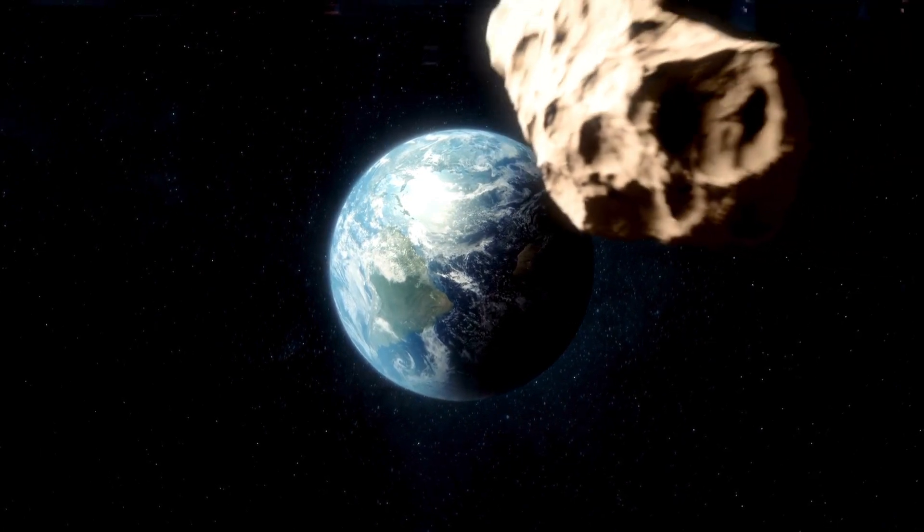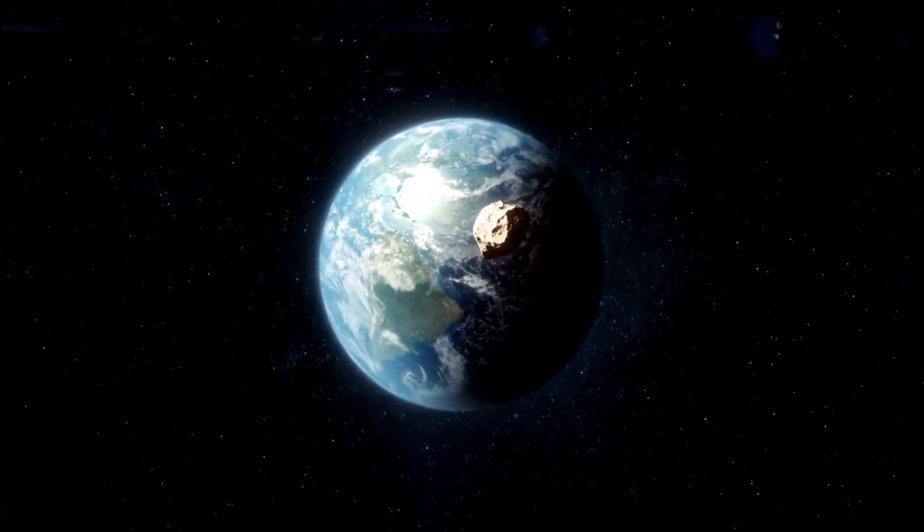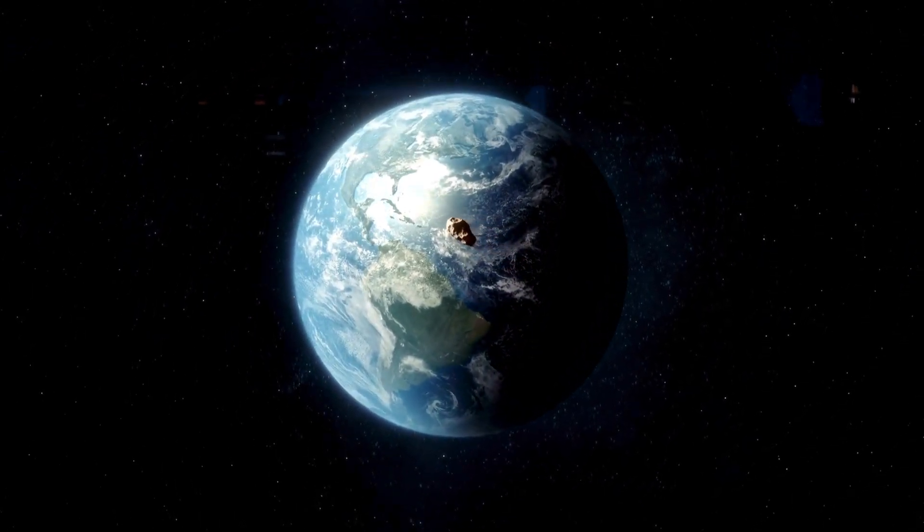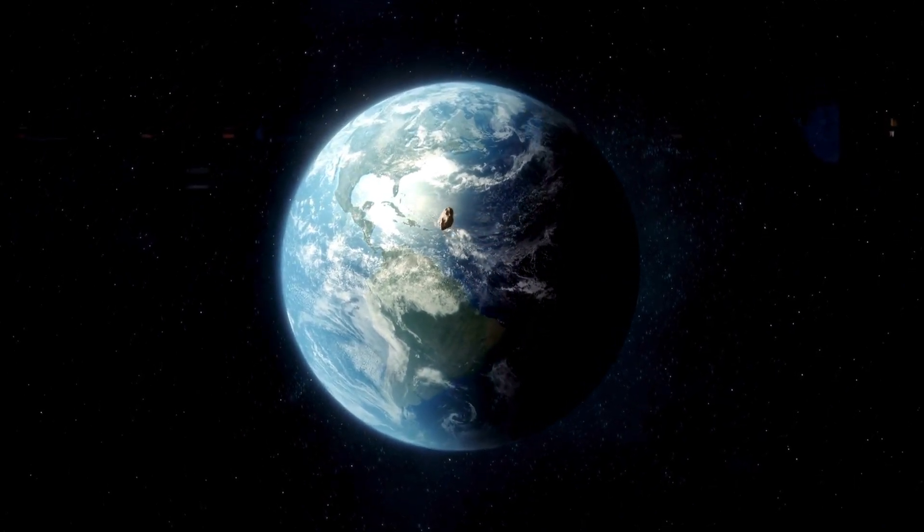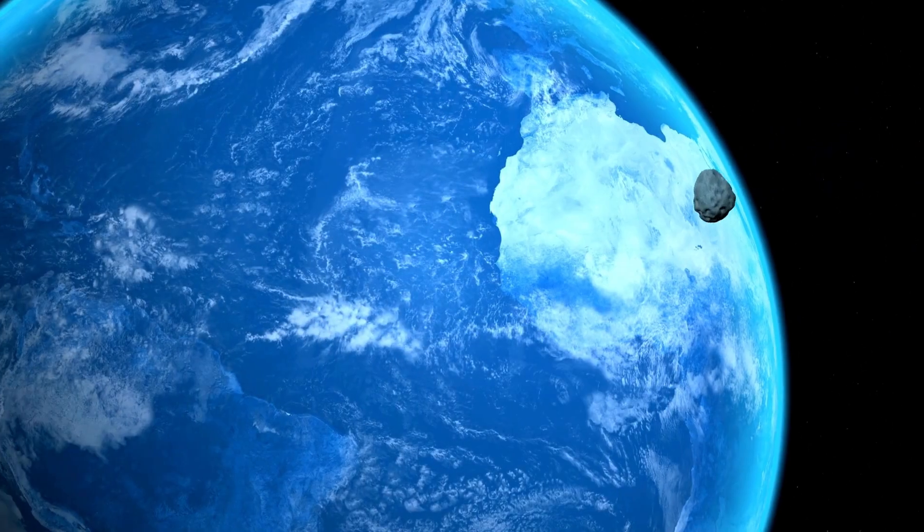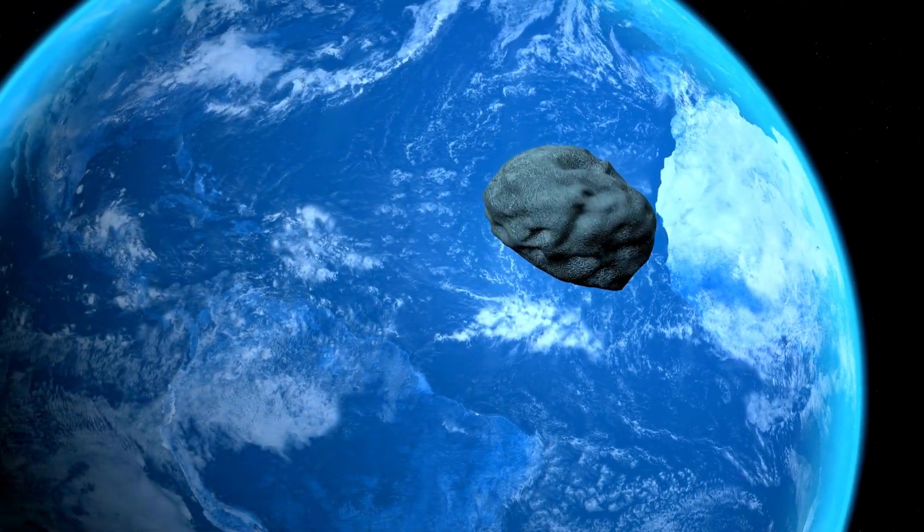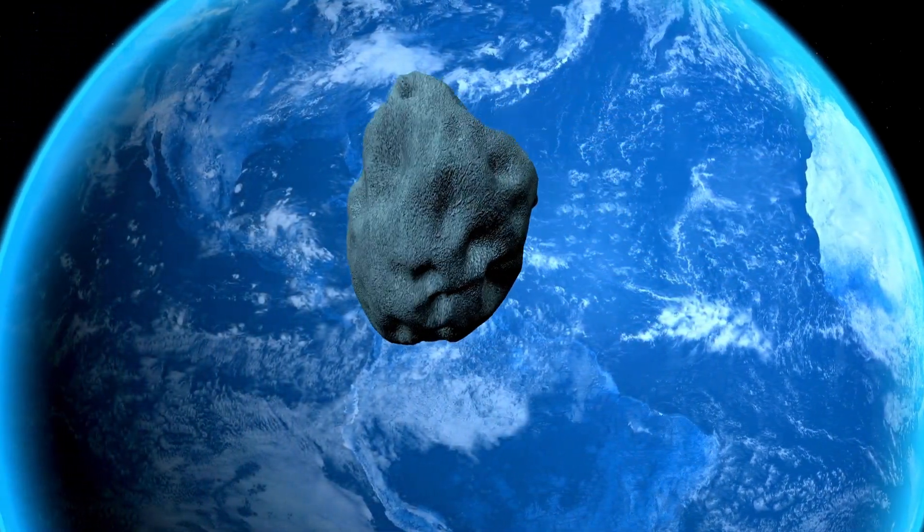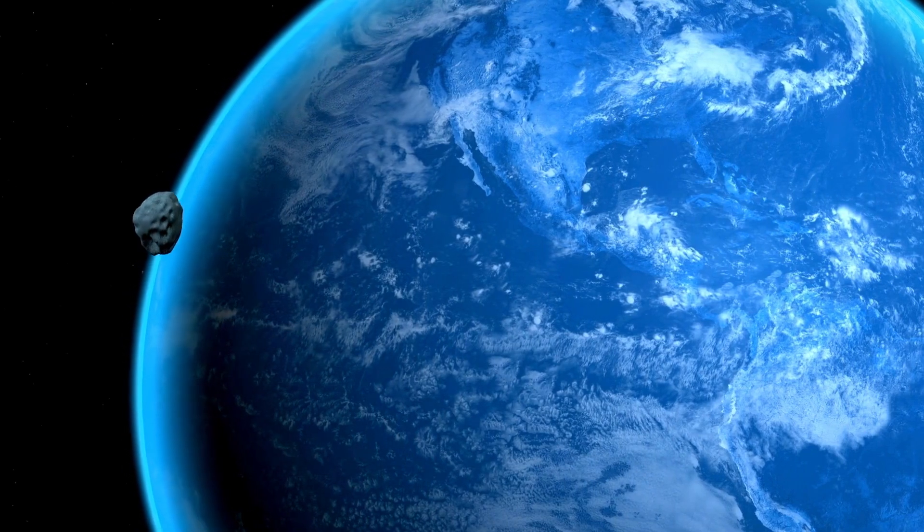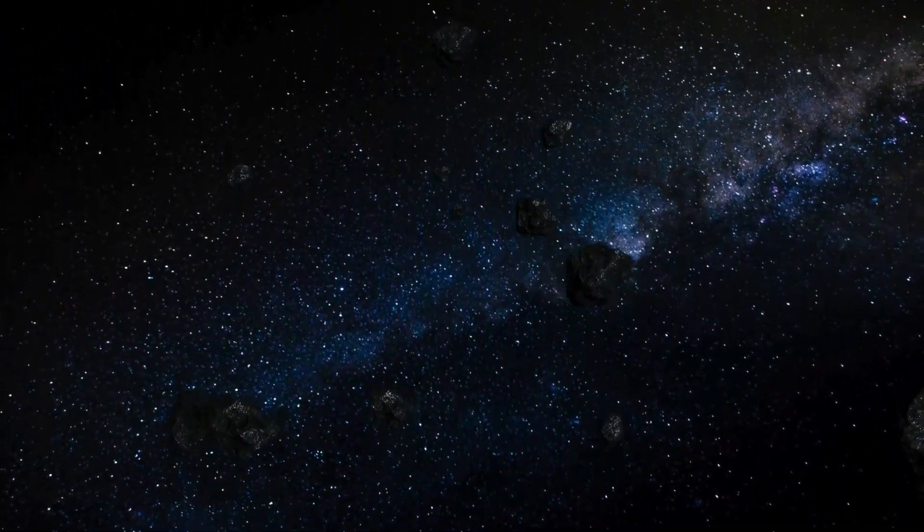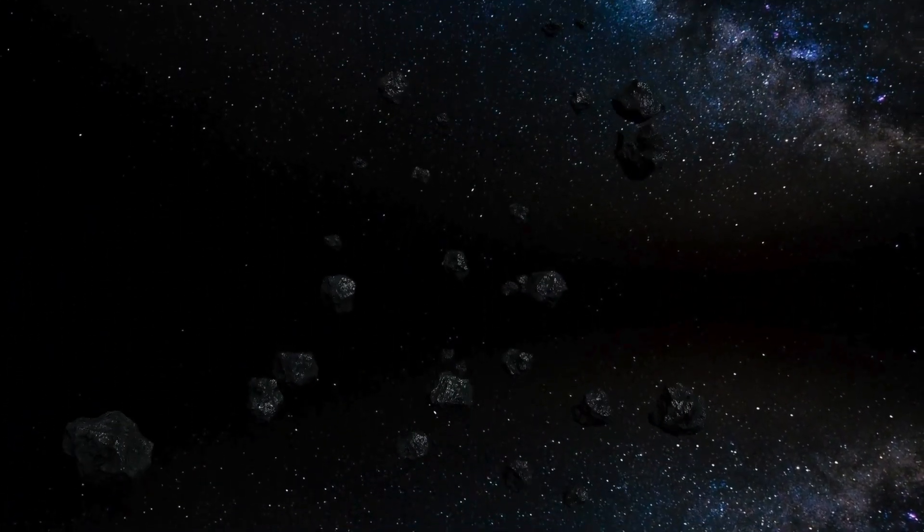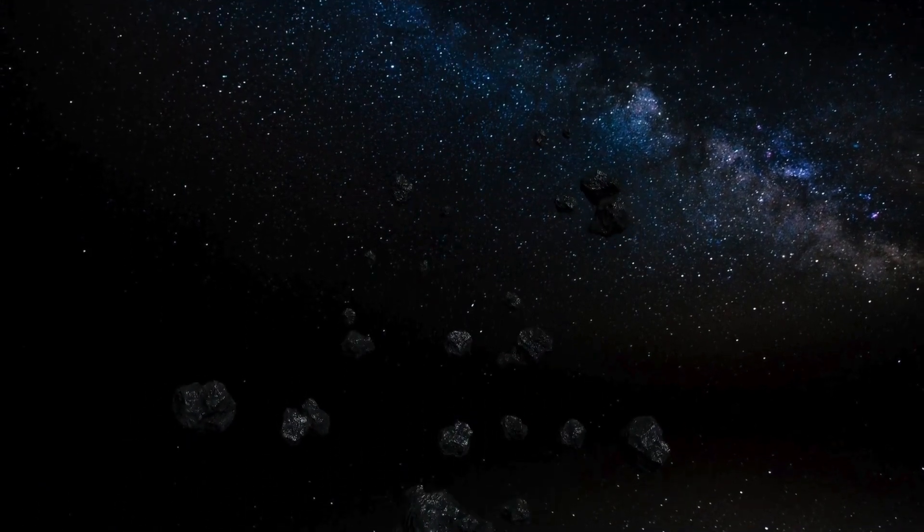So where does our little buddy 2024 PT-5 fit into all this? How does studying a mini moon around Earth help us understand those moons way out by Mars? It helps us fine-tune our models by watching how 2024 PT-5 interacts with Earth's gravity. Like how fast it's going, what path it takes, how long it sticks around. We can test our simulations and get a better idea of how objects get captured or even formed from these big impacts. So it's like using a small-scale model here to learn about something massive that happened millions of miles away. Exactly. Every time we observe a mini moon capture, it's like another piece of the puzzle. It helps us understand this incredible dance of gravity and the forces that shaped everything around us.